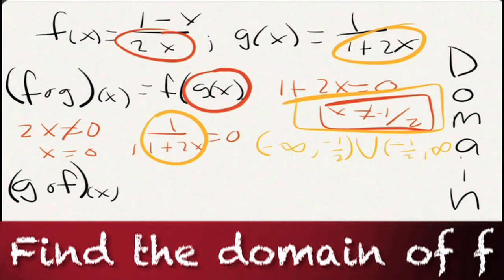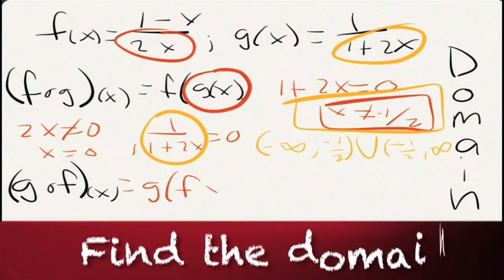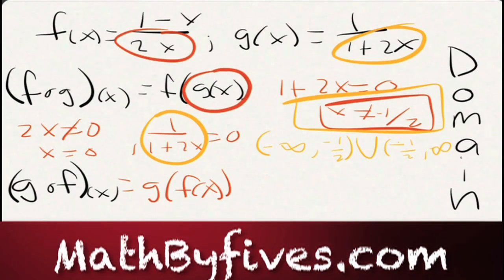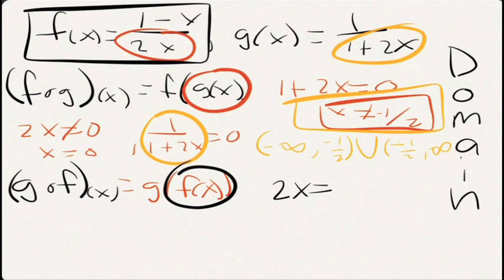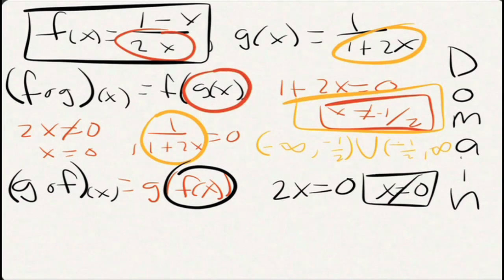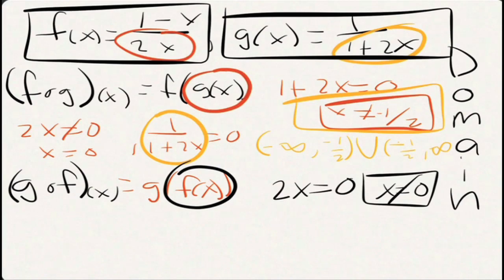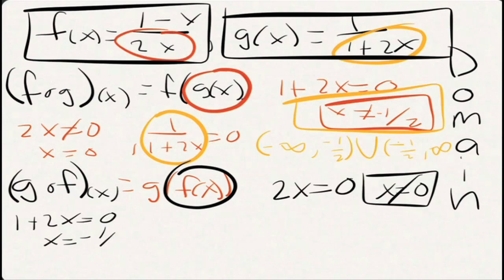Now let's look at g(f(x)). That means we're putting f inside g. We need to first worry about f being undefined — f is undefined when its denominator equals zero, which happens when x equals zero. So we exclude that. We also need to worry about where g is going to be undefined. G is undefined when one plus two x equals zero, so when x equals negative one half, g is undefined.